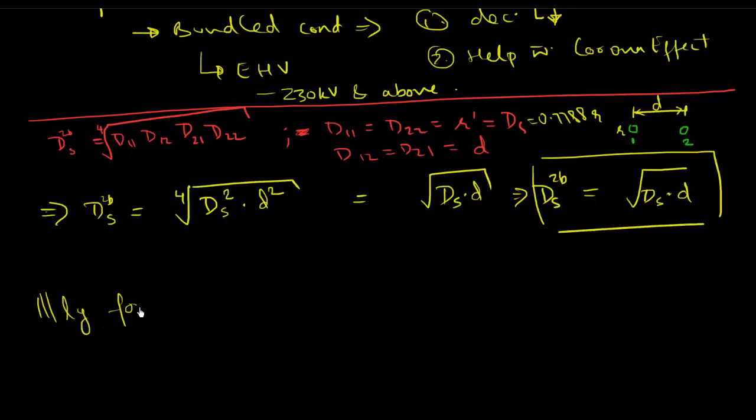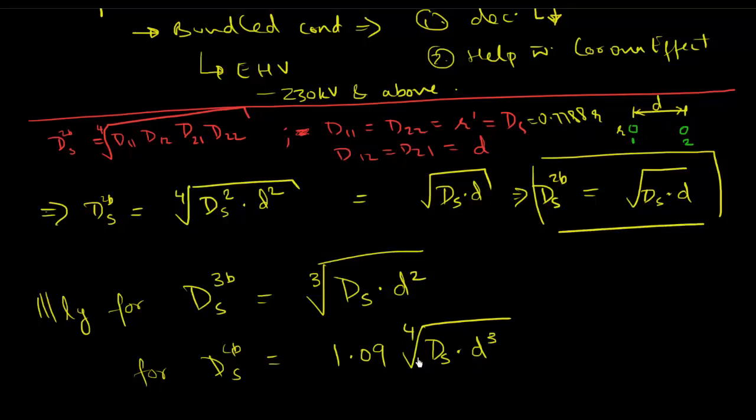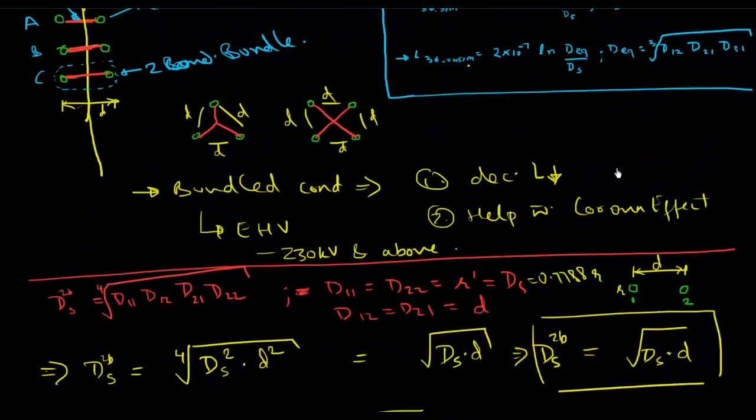Similarly, for a three-bundle conductor, we'll get the value is equal to the cube root of ds times d squared. And for four bundles, we would have ds^4b is equal to 1.09 times the fourth root of ds times d cubed. I want you to try and use this formulation and derive these equations. If you can't, let me know and I'll solve them out for you, but it's relatively straightforward once you plug in all the values.